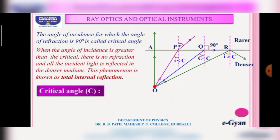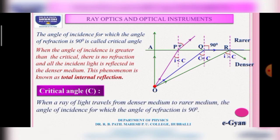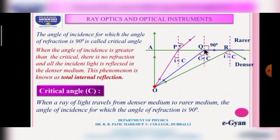Now let us define the critical angle. When a ray of light travels from a denser medium to a rarer medium, the angle of incidence for which the angle of refraction is 90 degrees is called the critical angle, as shown in the diagram.